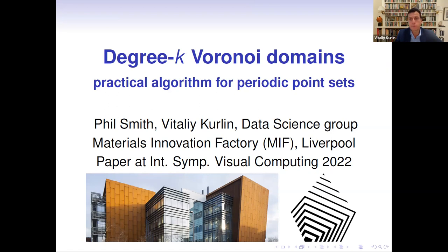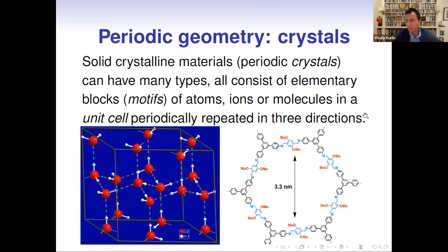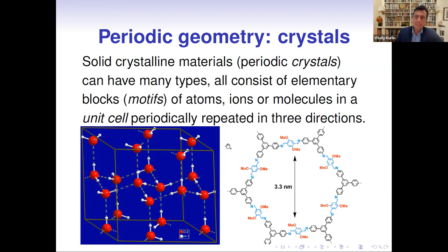Let me start with a few introductory slides, as many of you have seen them before, but just in case for any new people in the audience. I'll remind what we consider periodic crystals, which are modeled by periodic sets of points. We simply put one zero-size point at every atomic center. A periodic crystal is informally defined as a periodic structure obtained from a basic block of multiple atoms, ions, or molecules in a unit cell. This block, which is not necessarily rectangular, is repeated periodically in three directions.